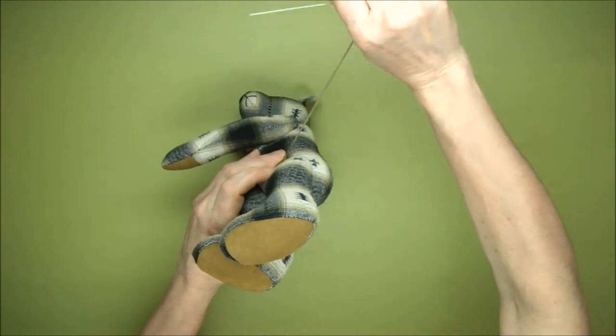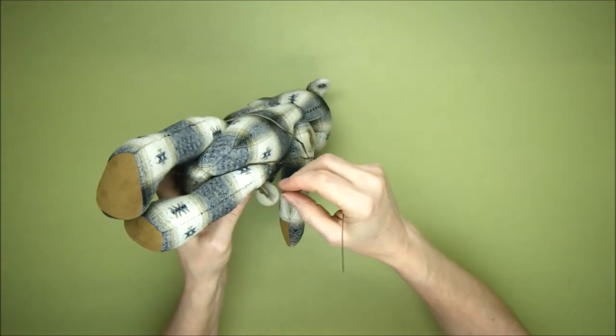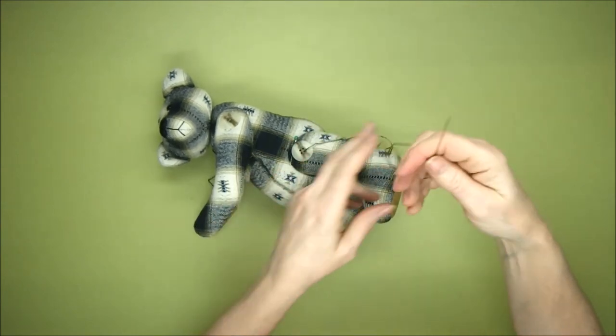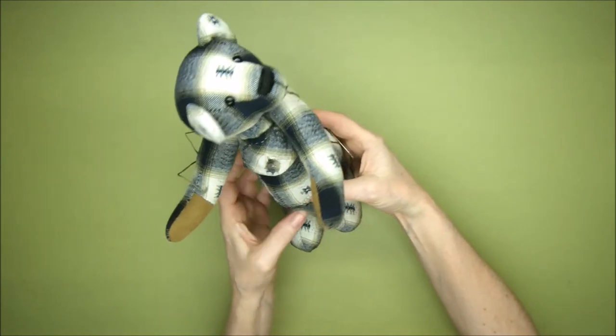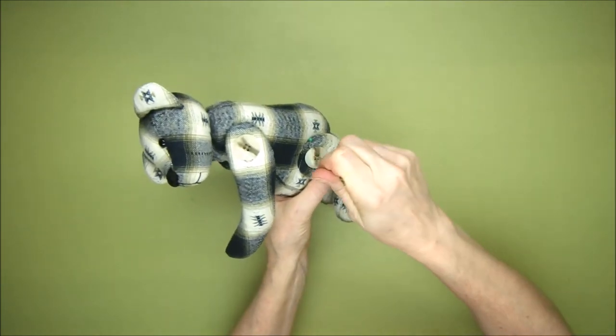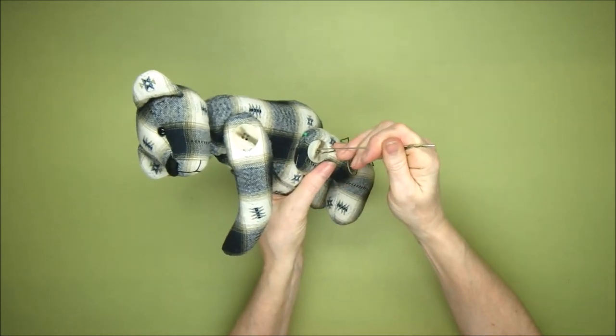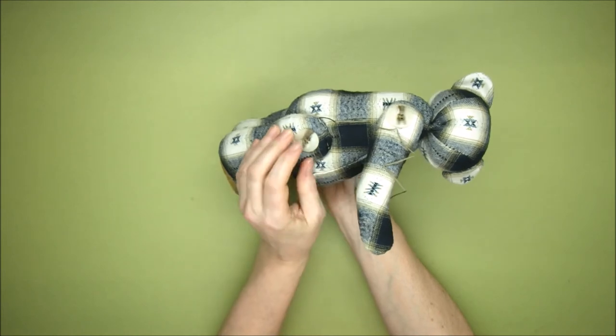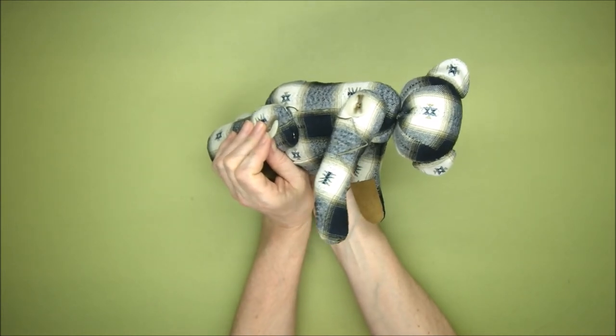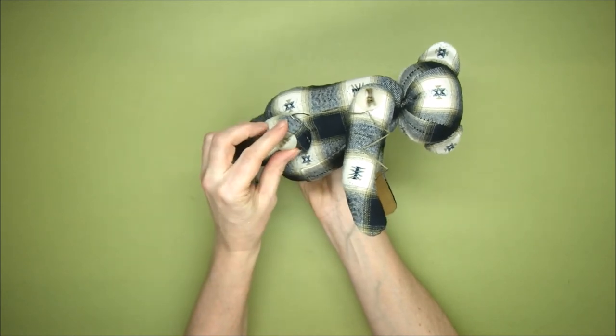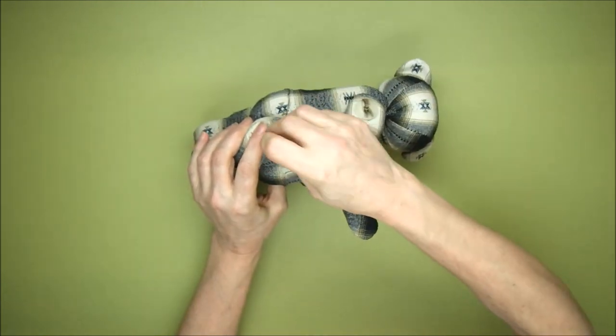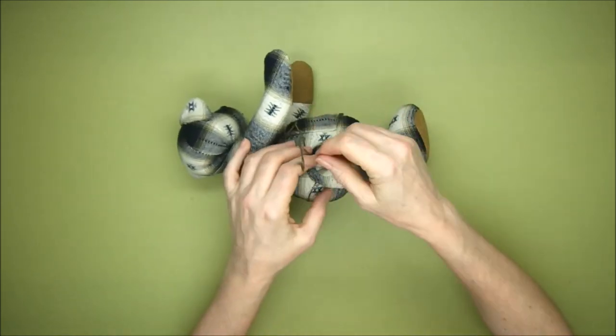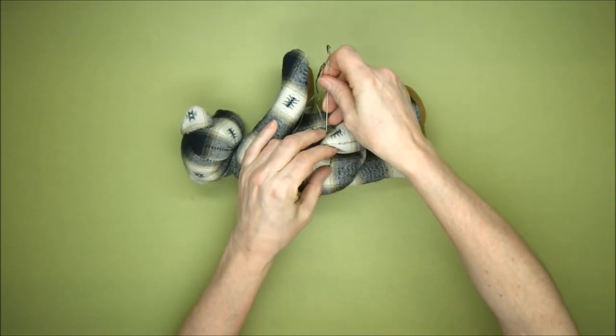Pull the needle through. Getting a little tangled with the thread here, pull it nice and tight. That's it. And then back through, all the way to the opposite side, coming out at the same position as the previous threads. And then once we've done that one, we're going to pass through to that joint between the leg and the body again, coming out where the threads are at the back.